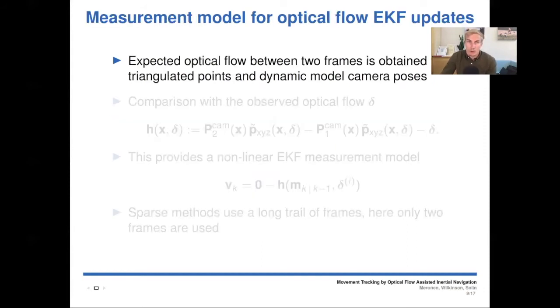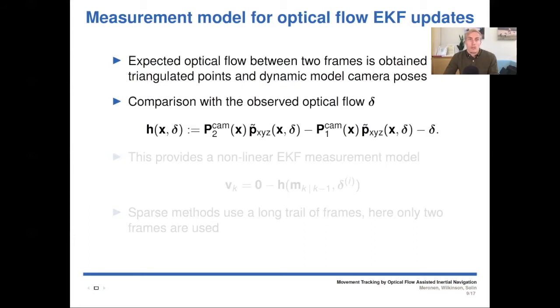Then our measurement model of the EKF. We can calculate expected optical flow between two frames, and we can use the triangulated points and the dynamic model camera poses to do this. And then we can compare this expected optical flow with the observed optical flow delta to get our measurement model. And here P_cam is the camera pose, P_X, Y, Z is the triangulated point, and delta is the measured optical flow.